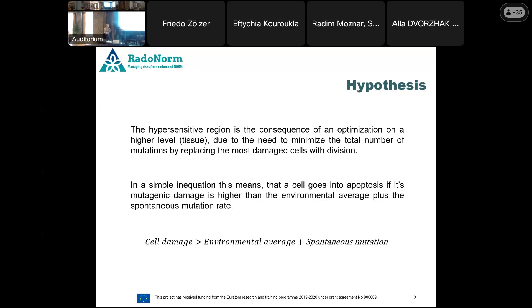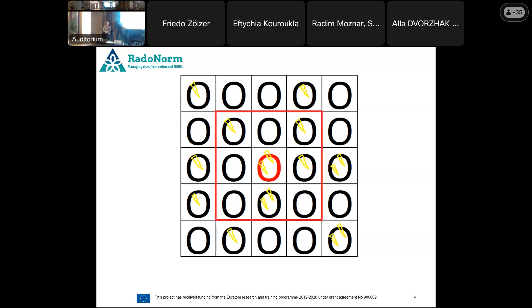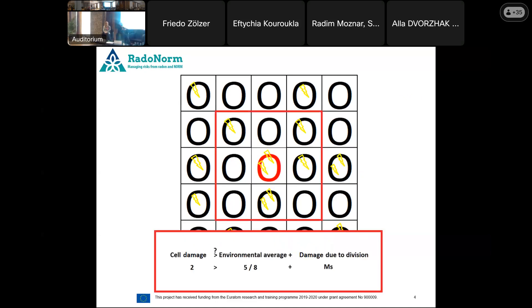So, if the cell damage is higher than this, we give each cell a damage number according to the Poisson distribution, because we are irradiating with photons. And we look at the neighboring neighborhood of our selected cell. Then we actually just do a comparison that, in this case, the cell has 2 damage. The environment has 5 over 8 damage on average, and we have some kind of damage due to the division, which is not an exact number here. But basically, this is a comparison that says if it's higher than it dies.